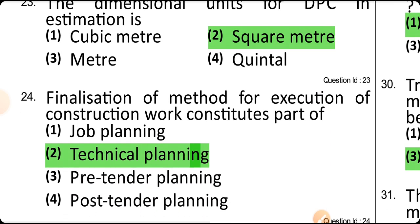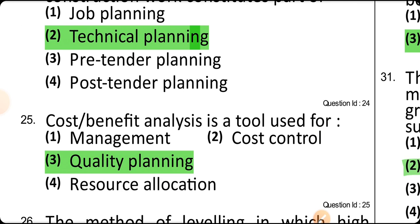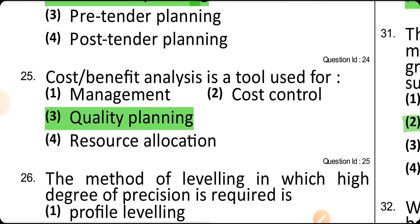Finalization of the method for execution of construction work is a constituent part of technical planning. Cost-benefit analysis is a tool used for quality planning.